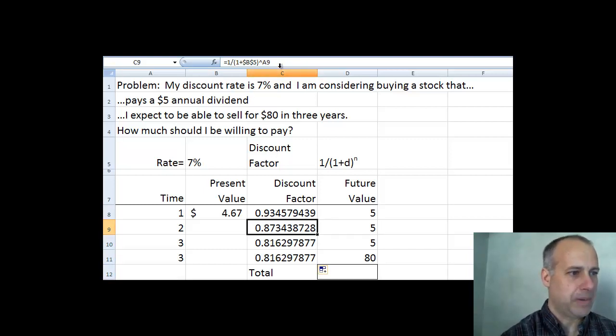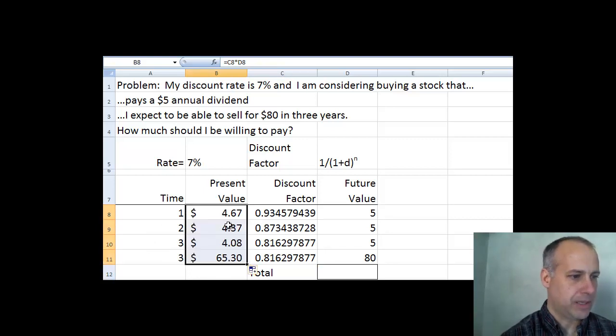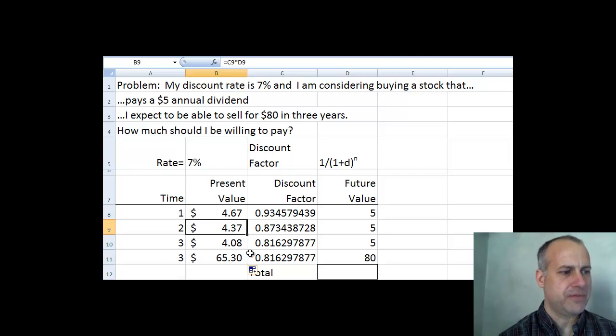So two years from now, the formula, if you look up here in the formula bar, the formula is 1 plus B5, which is 7%, raised to A9 now, which is 2, and it gives us a discount factor of 0.873 and so on. So copy the multiplication formula down. $5 received two years from now is worth $4.37. $5 received three years from now is worth $4.08. And then the $80 we get for selling the stock is worth $65.30.